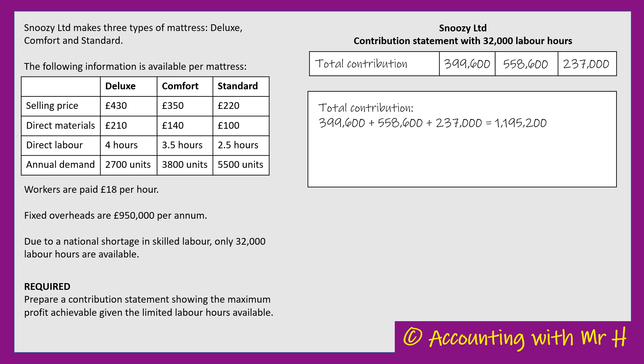That contribution goes first towards paying the fixed costs, and then any remaining becomes profit. The fixed overheads are £950,000 per annum. Taking this £1,195,200 contribution and subtracting the fixed costs of £950,000 means that if they follow this plan, it will generate a profit of £245,200.